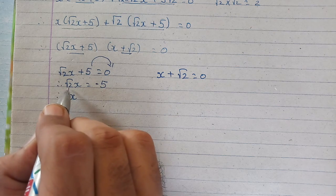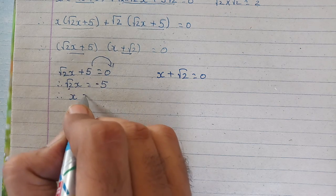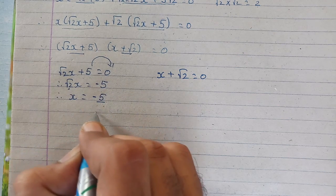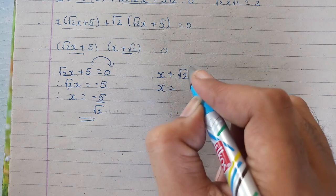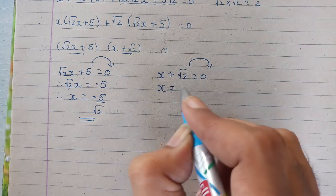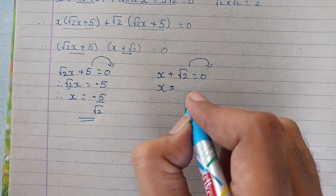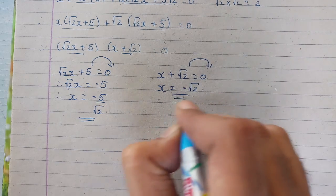Now, take this root 2 to the division with minus 5. So that will be minus 5 upon root 2. That is the value of x. And from here, x is equal to, we'll take root 2 to the minus right side, it will become negative. So that will be minus root 2.